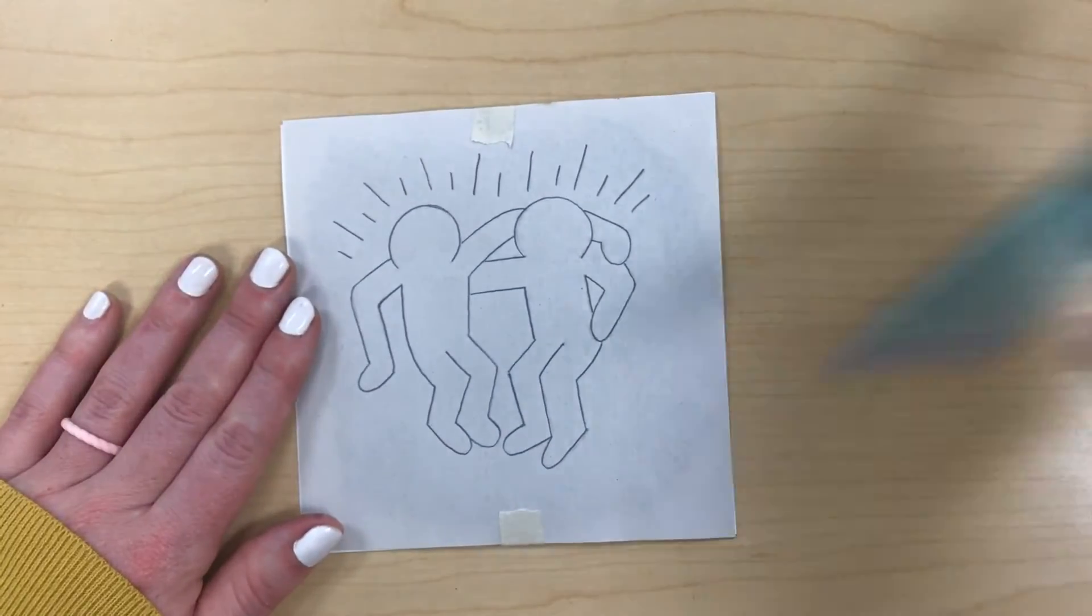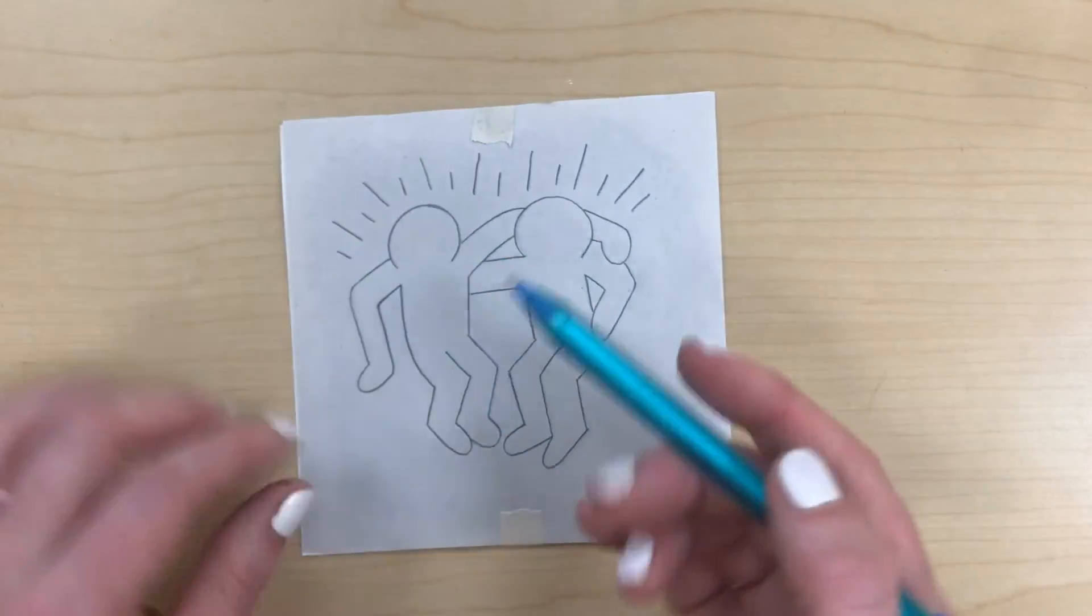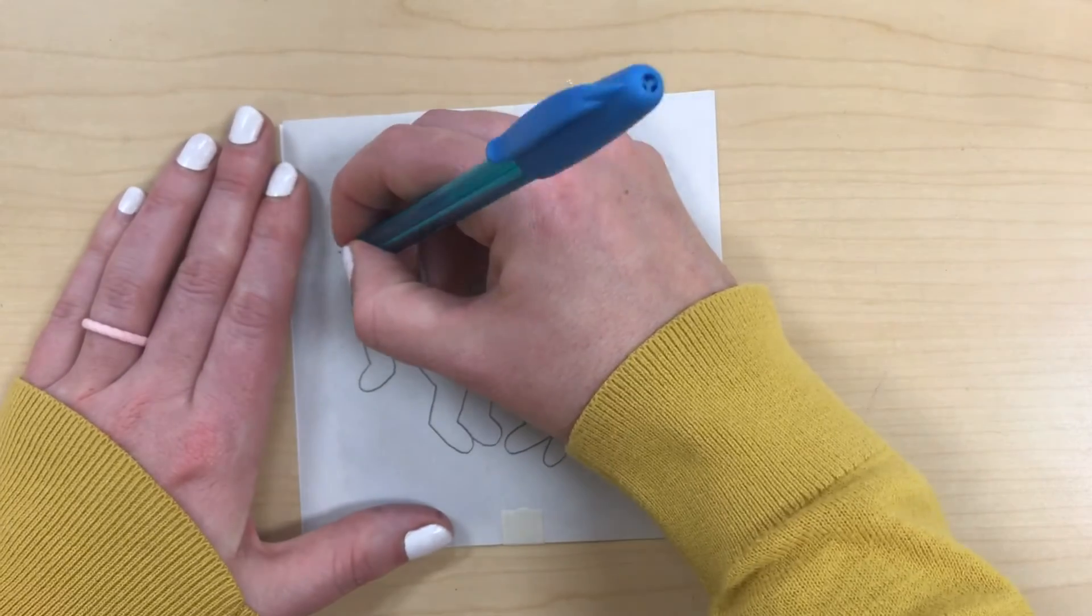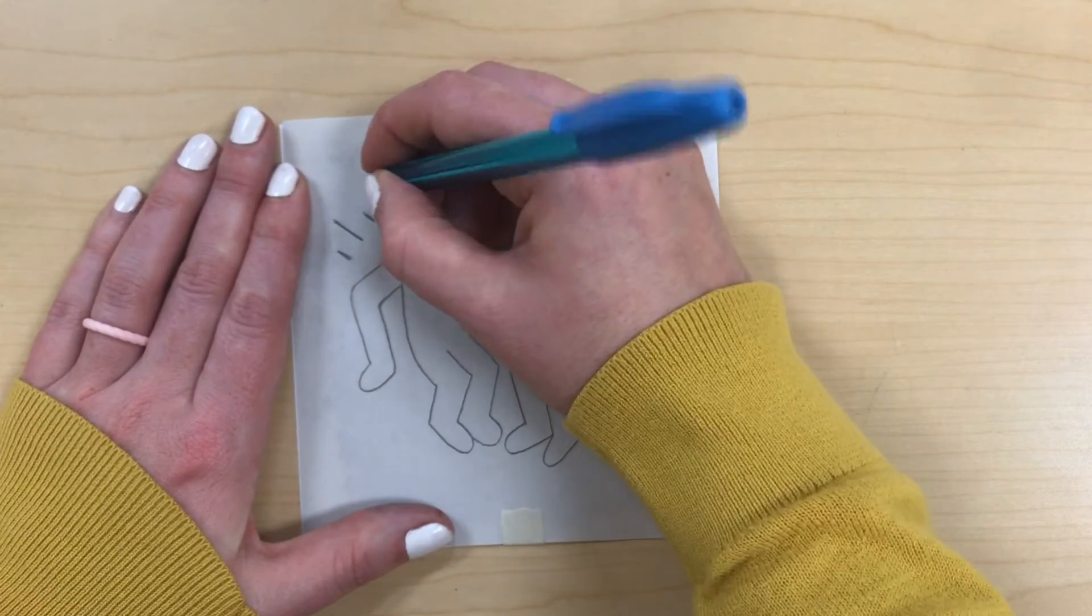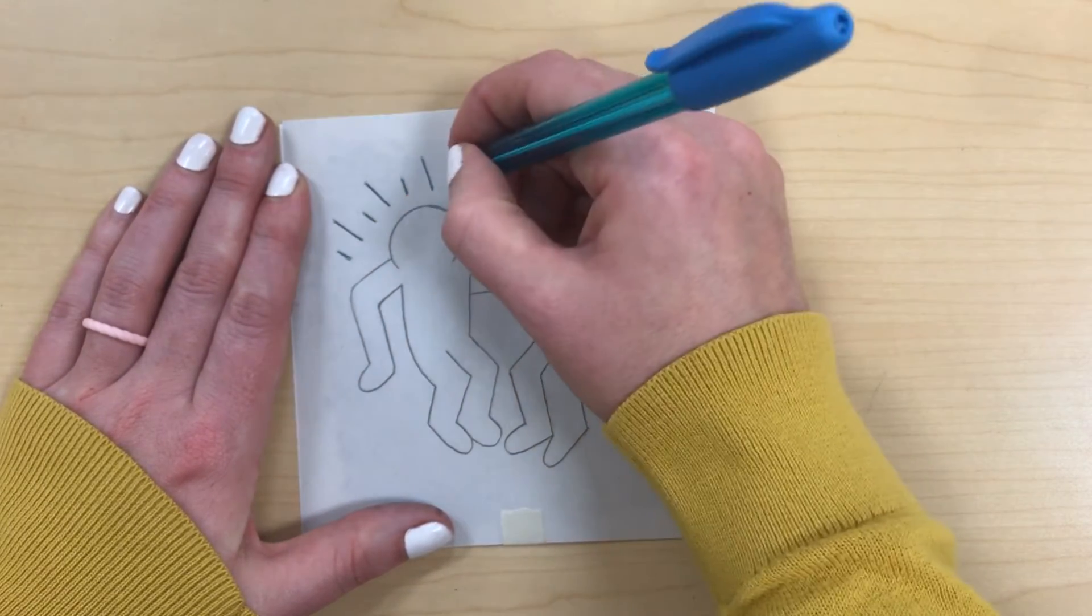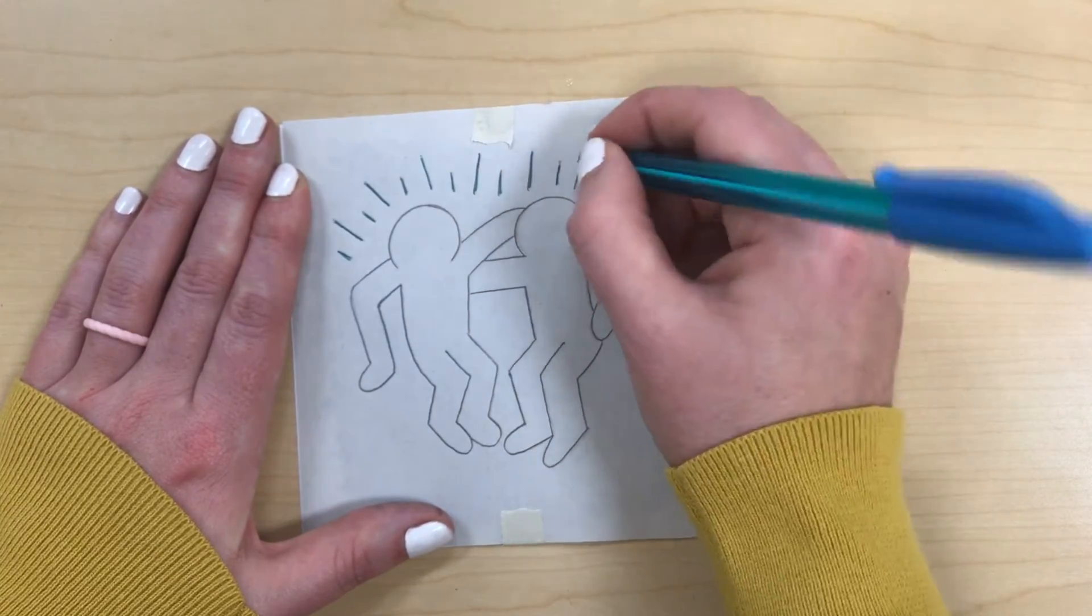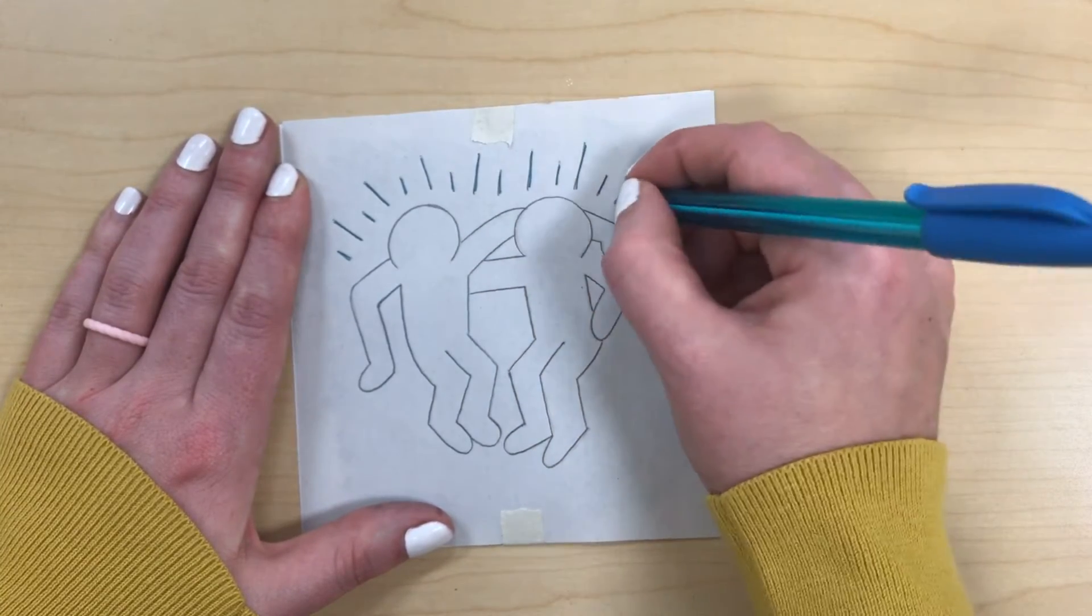Now I'm going to take a pen. I like to use a colored pen because I can see it easier. You're going to come through and you're going to trace over all your lines. I'm not pushing super hard. I'm pushing about as hard as I would if I were writing notes.